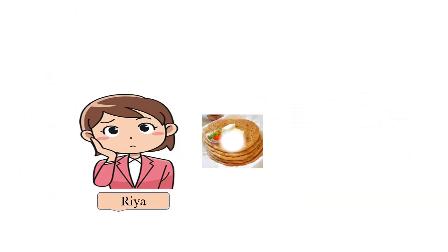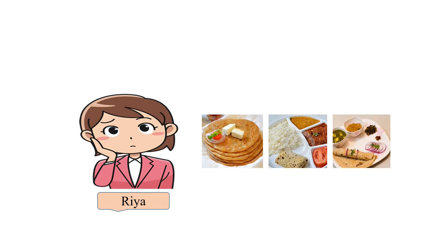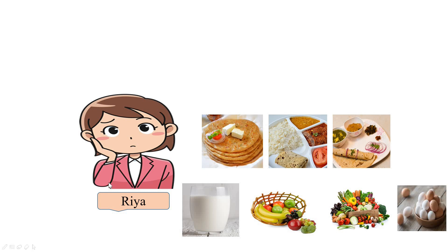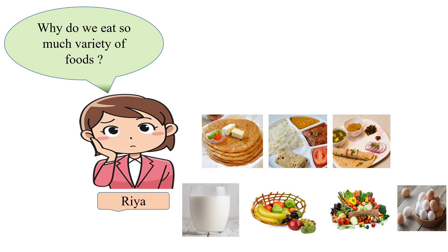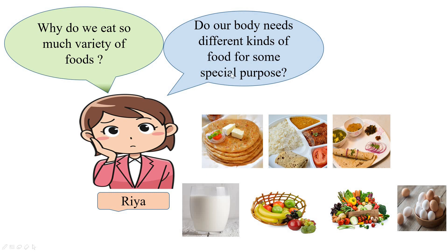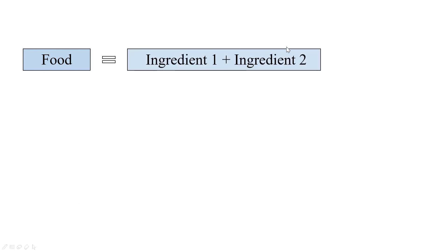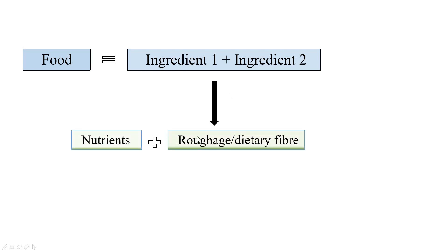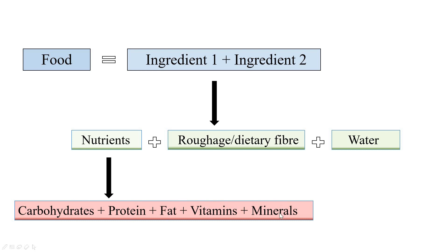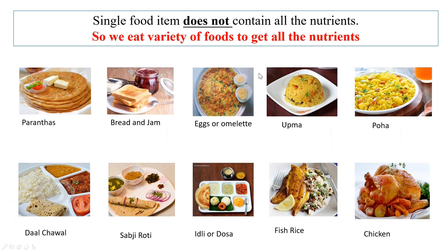Ria wonders: sometimes I eat aloo paratha with curd, sometimes dal chawal and sabzi roti. Mom always asks me to have milk, fresh fruits, green vegetables, eggs, fish, etc. Why do we eat so much variety? Can't I eat only foods I like? The answer is that food is made up of ingredients which contain nutrients, roughage or dietary fiber, and water. Nutrients are classified into carbohydrates, proteins, fats, vitamins, and minerals. No single food contains all these nutrients, so we eat a variety of foods to get all of them.